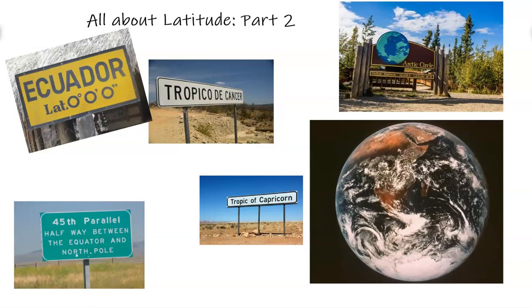Part 1 was just briefly looking at what is latitude. What are these parallel lines that go north and south of the equator from North Pole to South Pole? We looked at the important ones like the Tropic of Cancer, Capricorn which divides the tropics from the mid-latitudes, and then the Arctic Circle, the Antarctic Circle, and the polar regions.